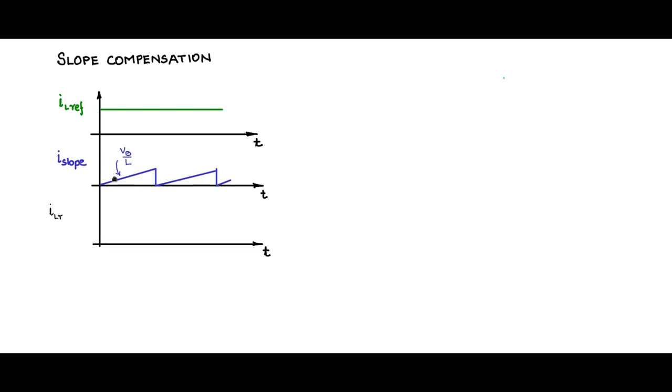This type of wave shape should have a slope with a magnitude of vb/L. This is called i_slope. The new reference will be il_ref minus i_slope, and that will look like a ramp-subtracted waveform.